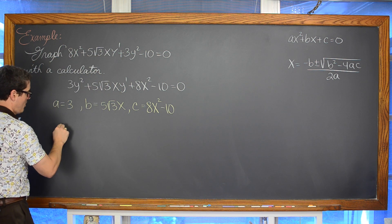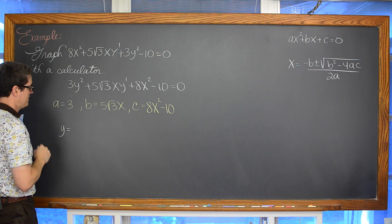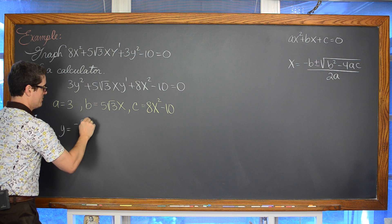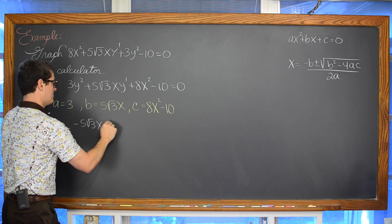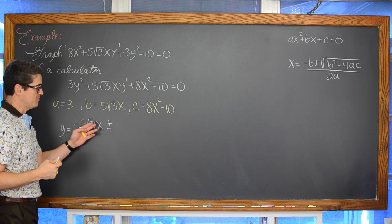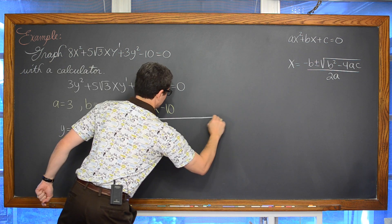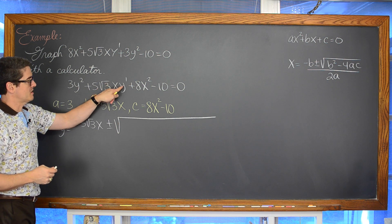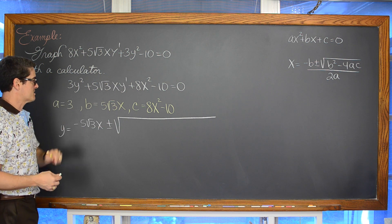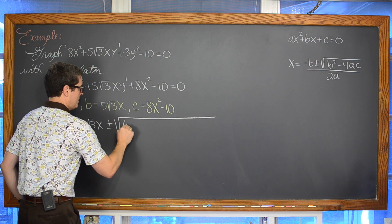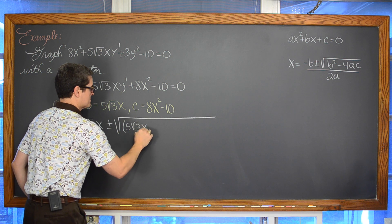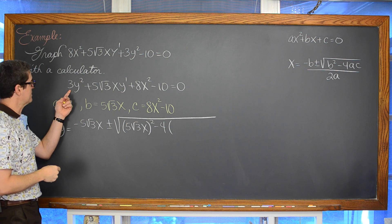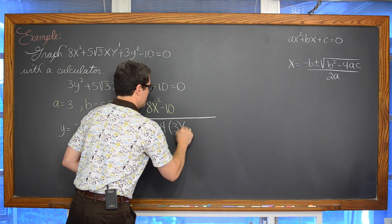So y, going to the quadratic formula, y is equal to the opposite of b, so we are going to have -5√3x plus or minus, so we have the opposite of b plus or minus the square root of b². So again, b being that coefficient of this variable with a single degree, that is going to be 5√3x², so here is my b² minus 4a, my coefficient of my squared term, which is going to be 3, so 4ac.